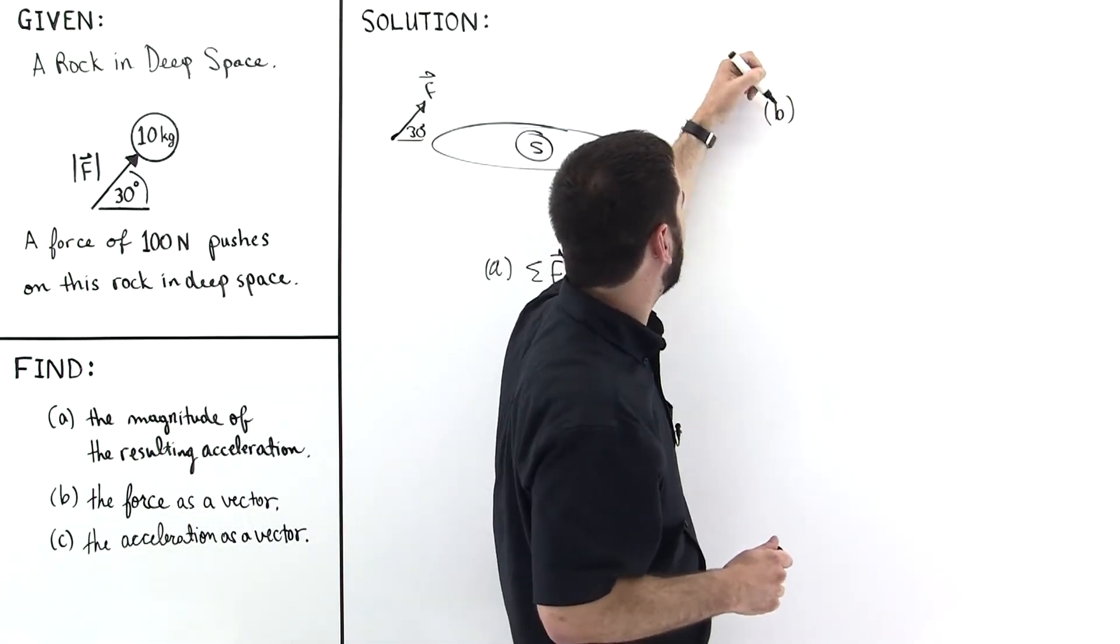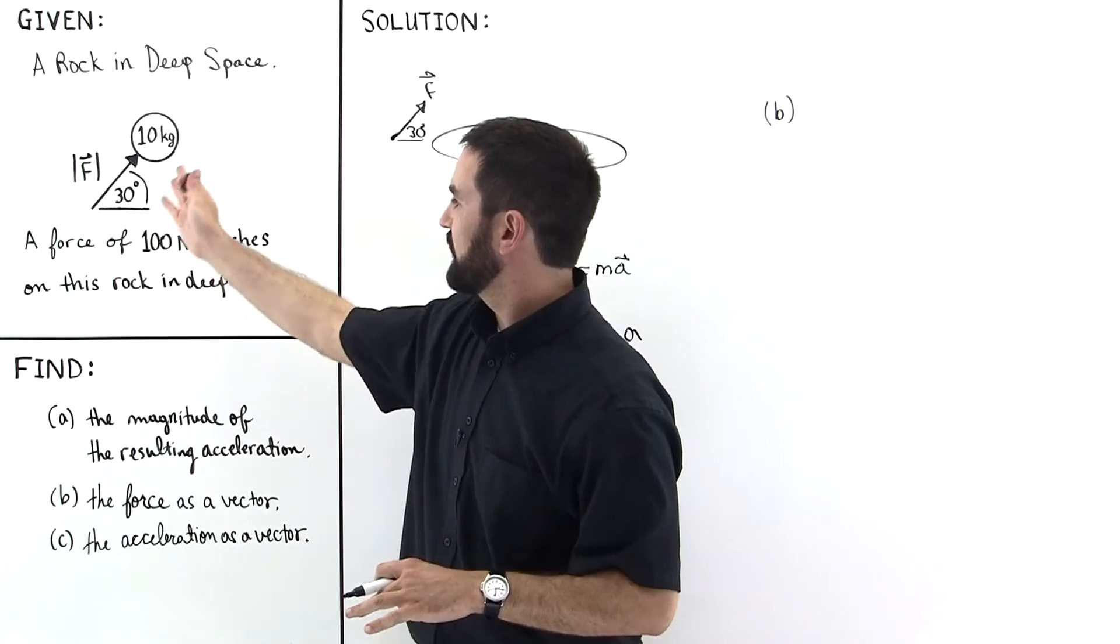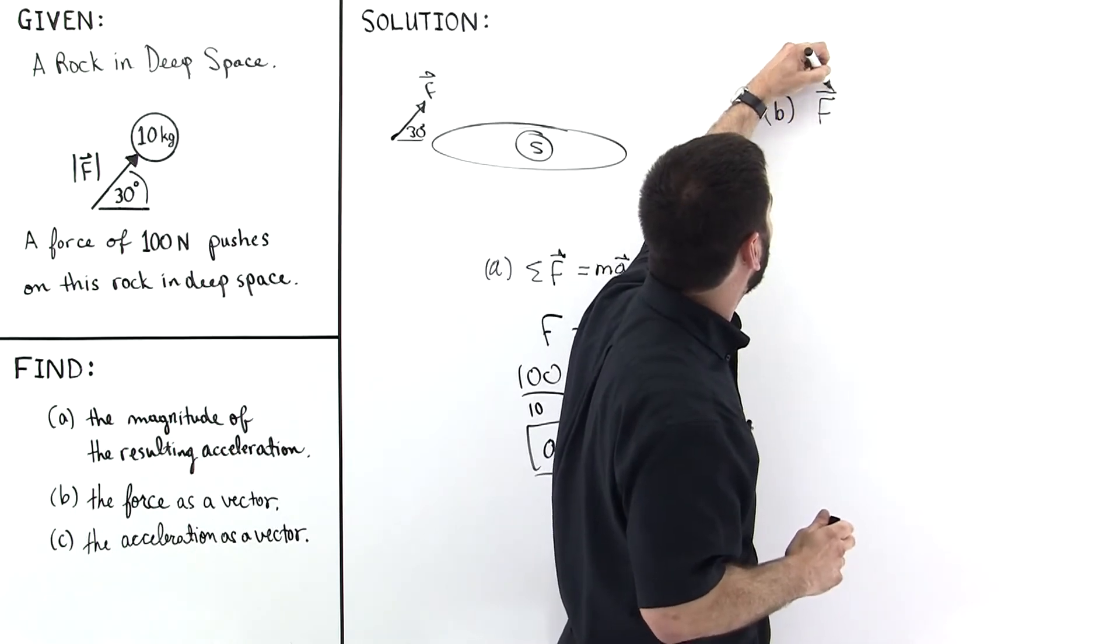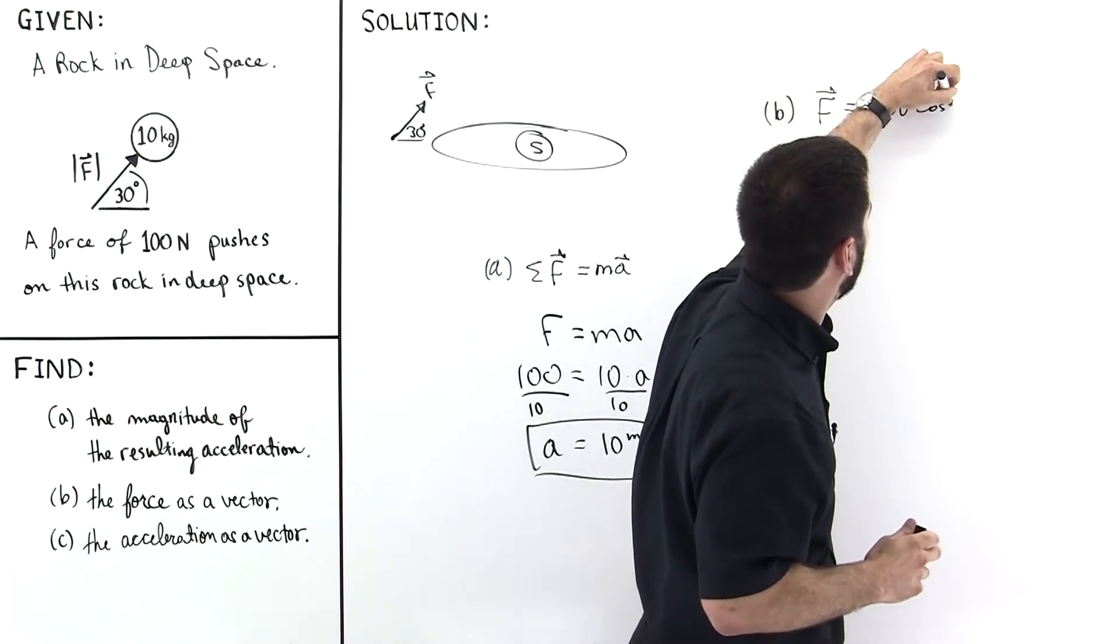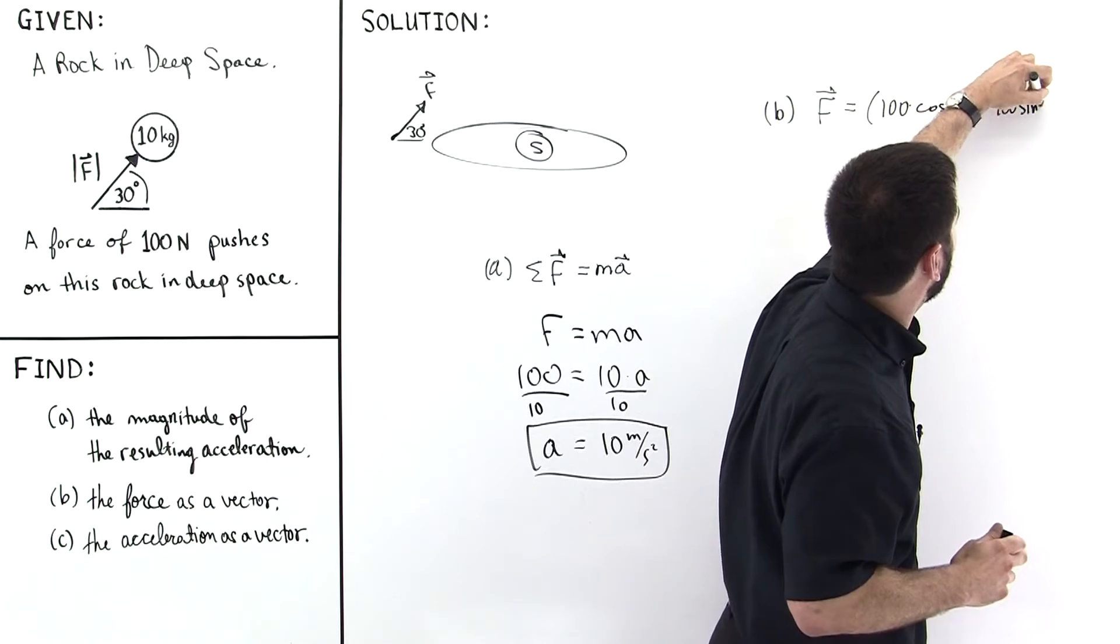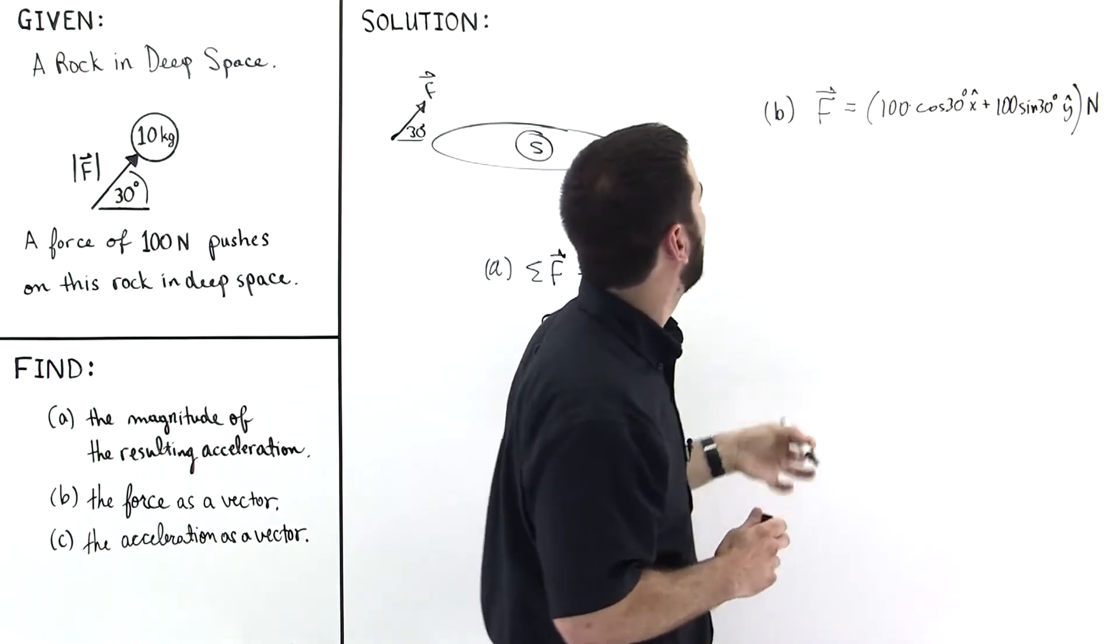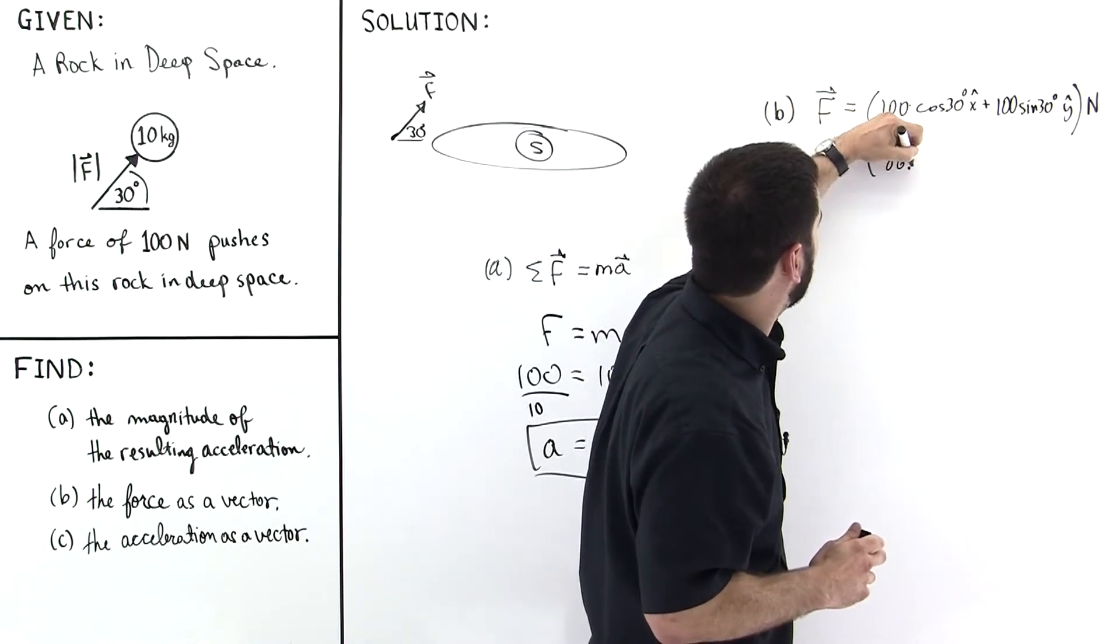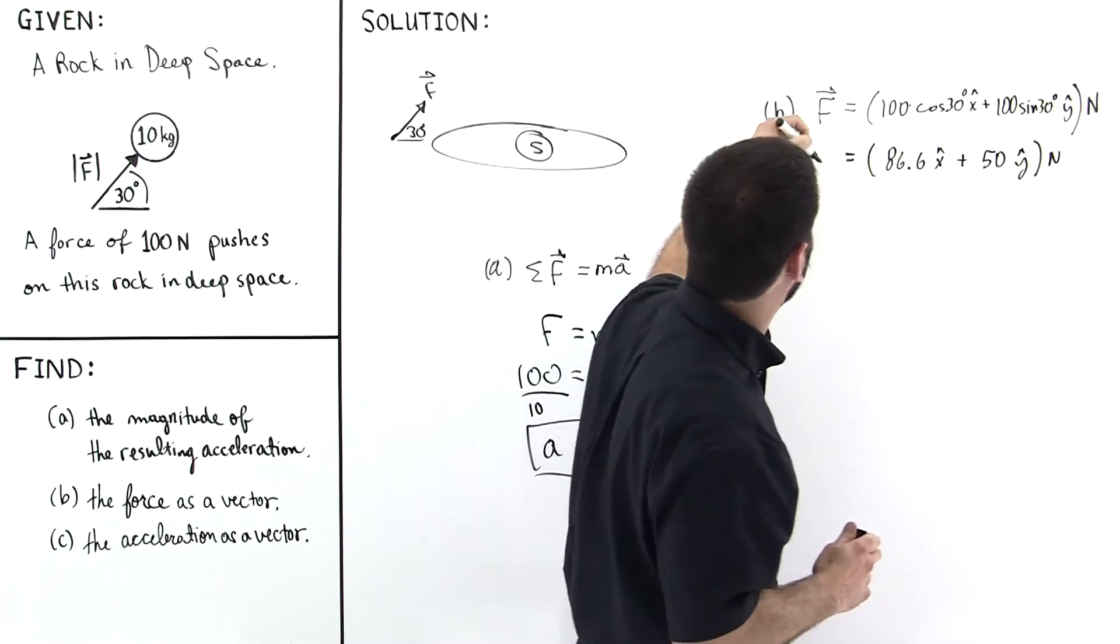For part B, it says to find the force as a vector. So we're backing up to demonstrate certain ideas. So the force is acting up at an angle of 30 degrees. So to find the force as a vector, its components will be 100 times the cosine of 30 degrees x hat plus 100 times the sine of 30 degrees y hat. And that's in Newtons. And the cosine of 30 is 0.866. So this is 86.6 x hat plus 50 y hat. And that's in Newtons. So this is the force as a vector.